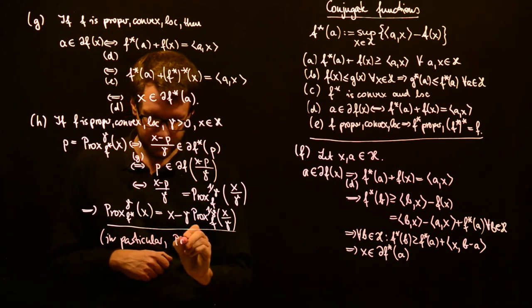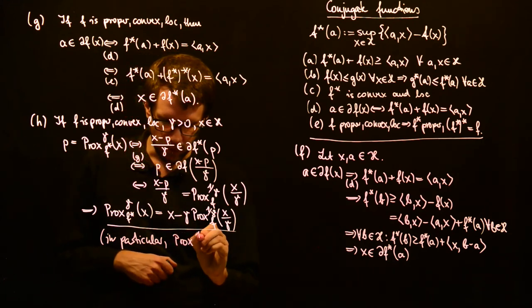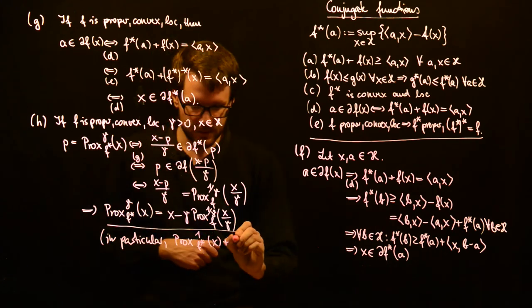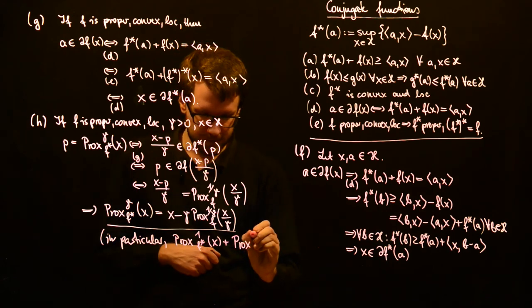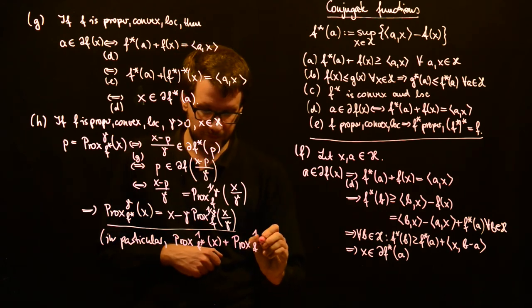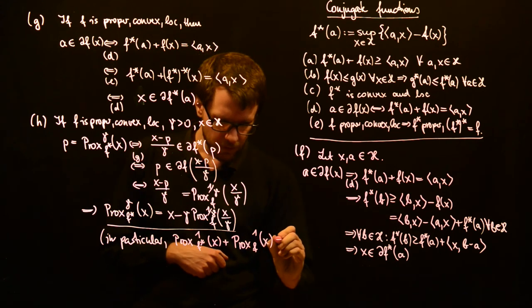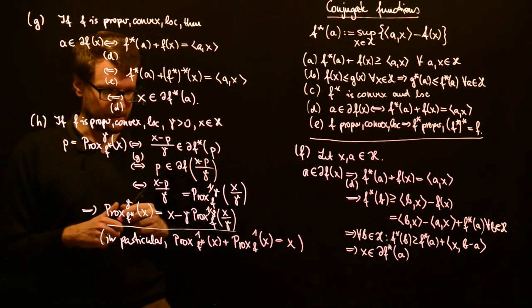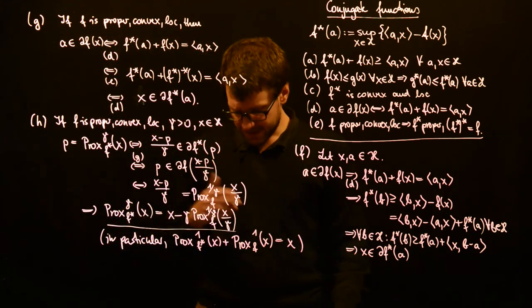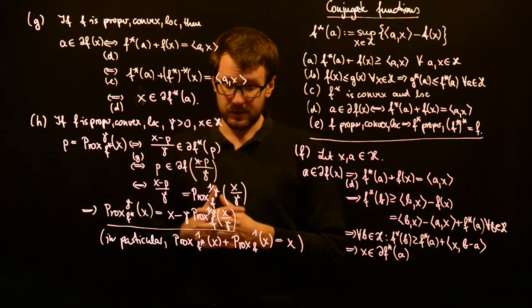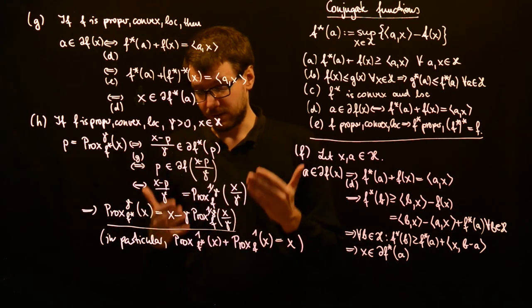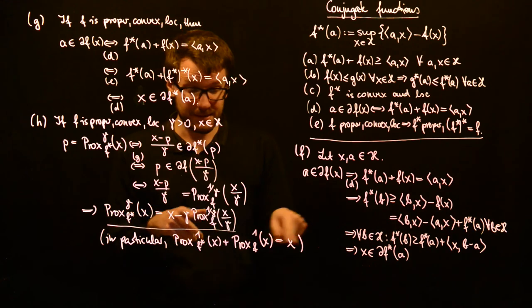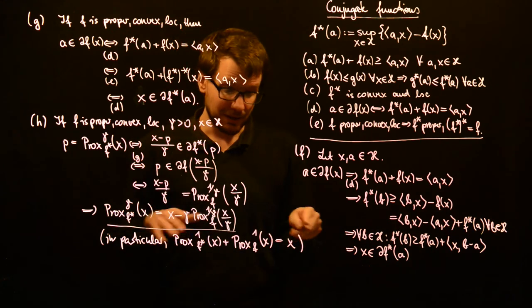So: prox_{1, f*}(x) plus prox_{1, f}(x) equals x. This is a very important special case, and it is parallel to the projection on orthogonal subspaces — in fact, it is a generalization of this.